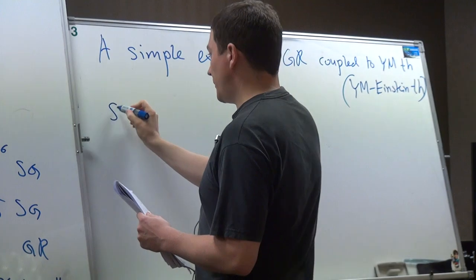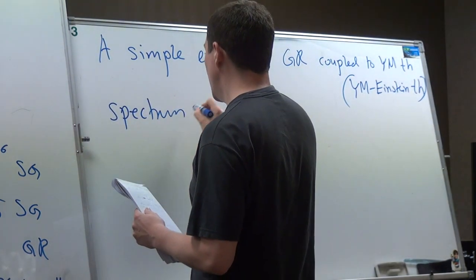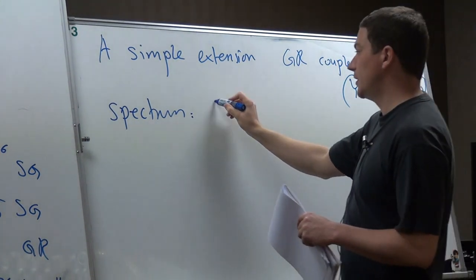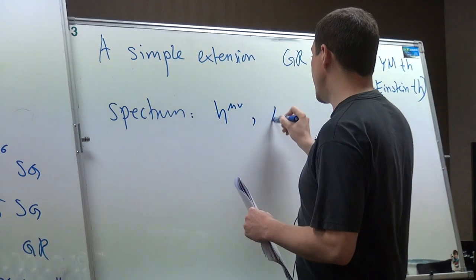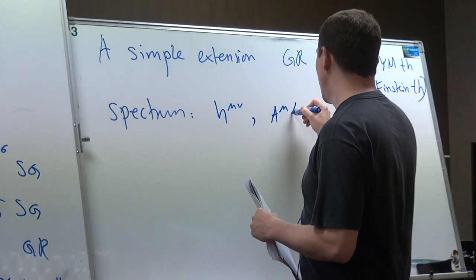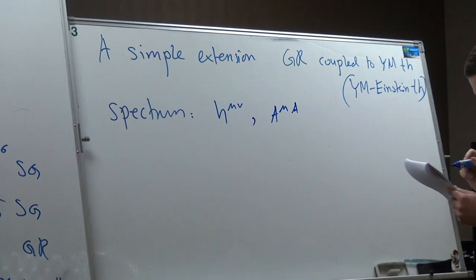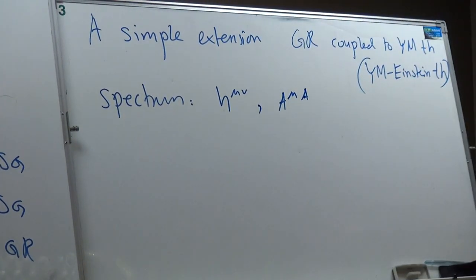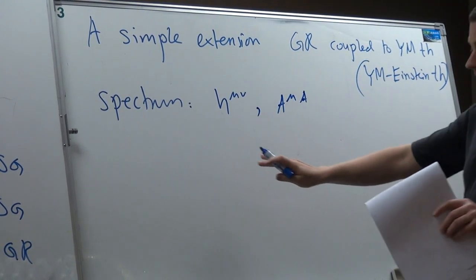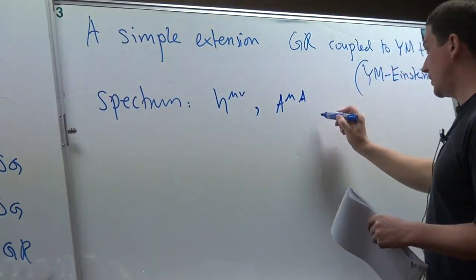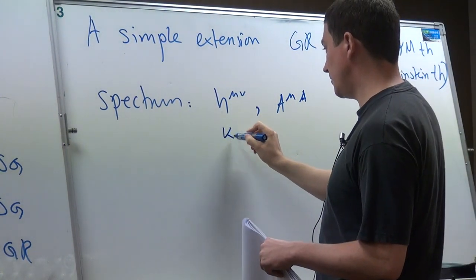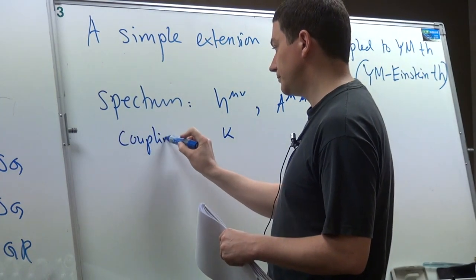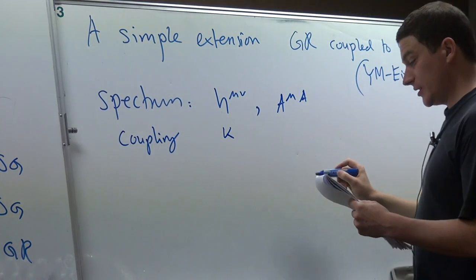Let me say a little bit about this theory and check what sorts of problems arise. First of all, the spectrum. In the most simple case, we can assume the spectrum is just a graviton and a gauge field. And interestingly, this theory has two couplings: a gravitational coupling kappa and a gauge coupling G.